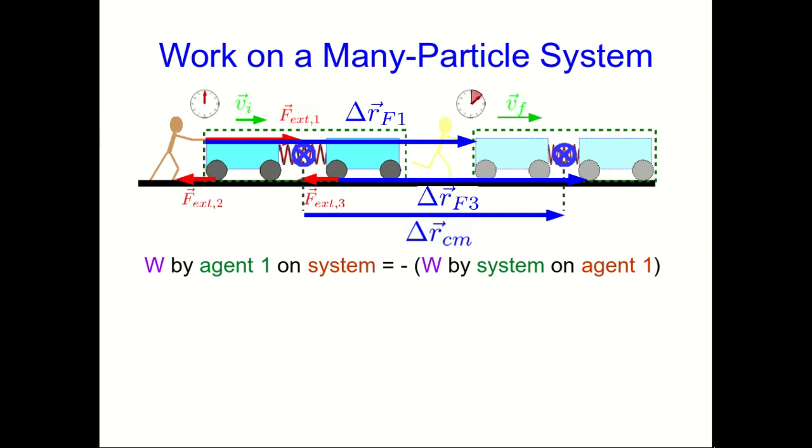But what we can do is go agent by agent. The work that agent 1 does on the system has to be the negative of the work that the system does on agent 1. That's conservation of energy. Any energy that agent 1 gives to the system, the system must have taken from agent 1.